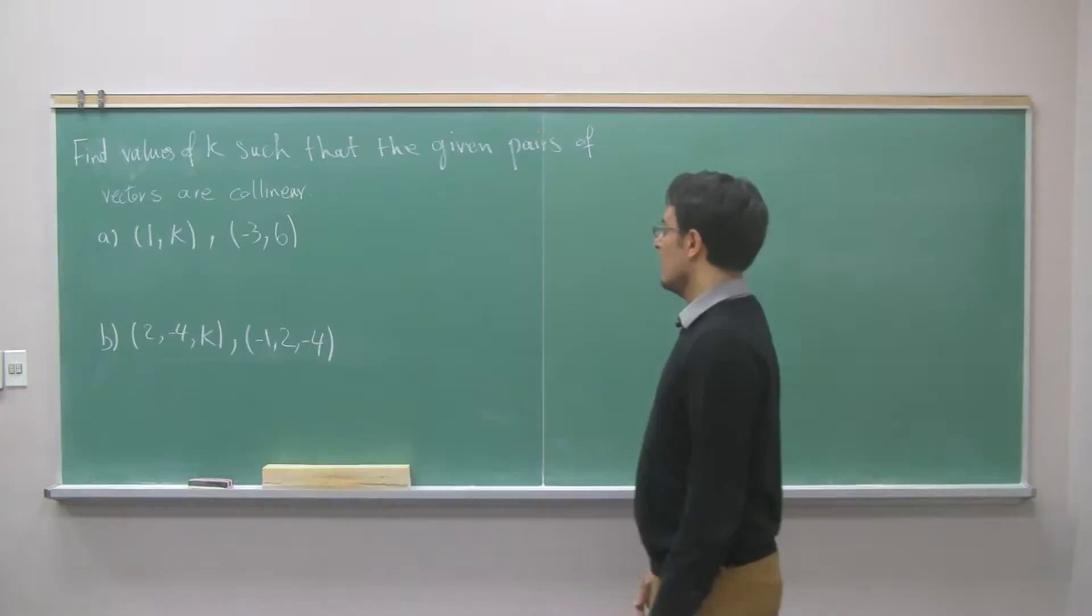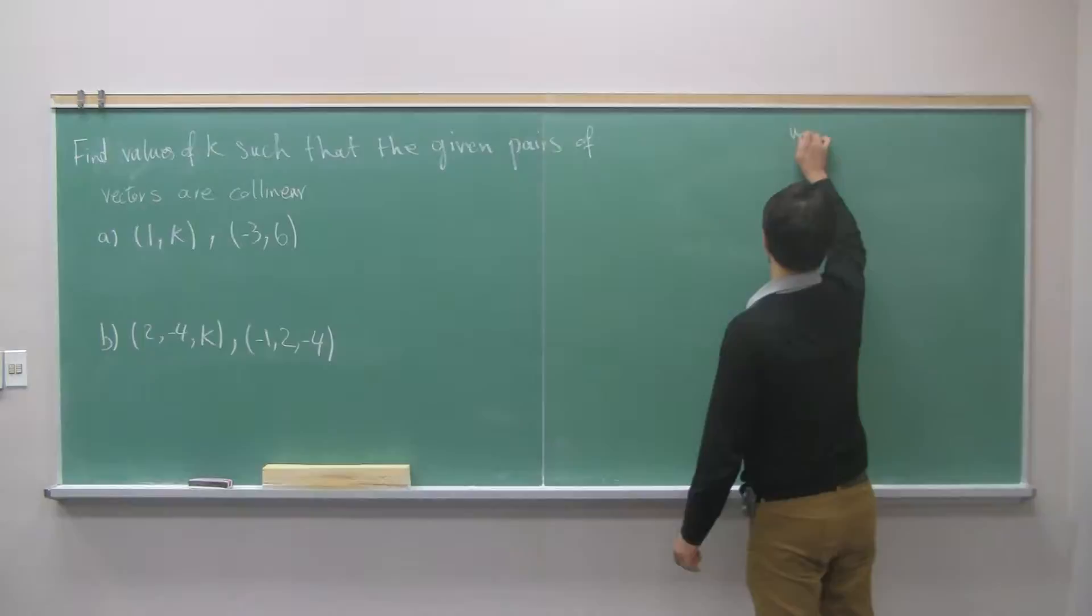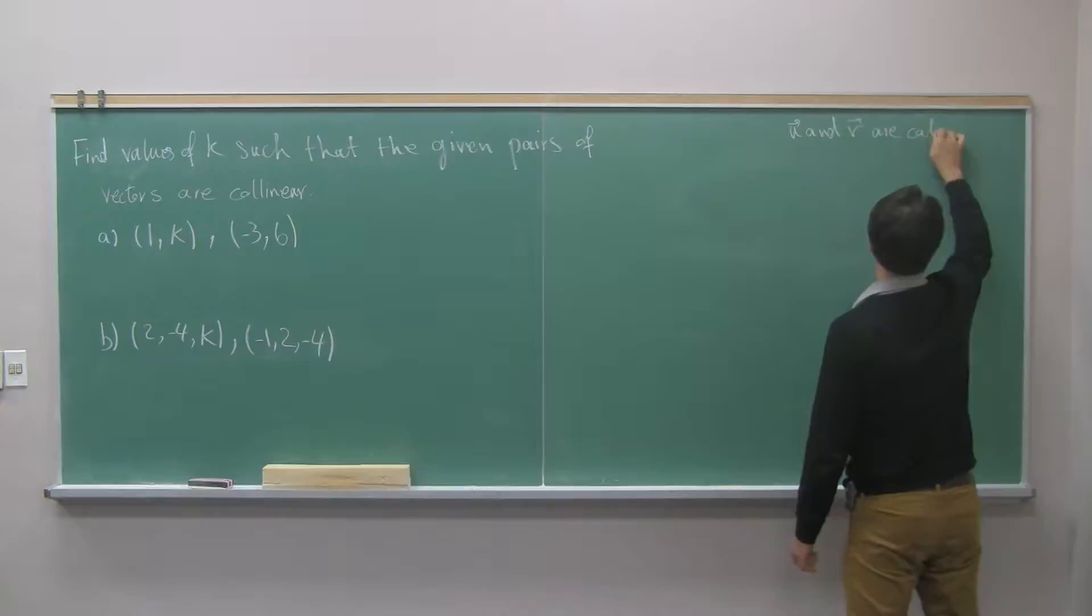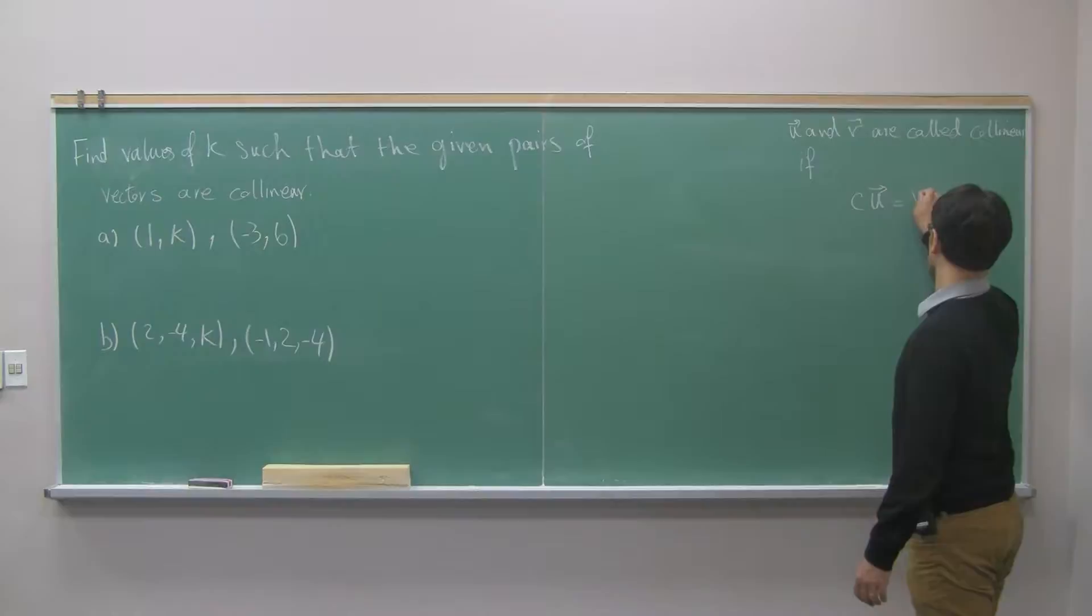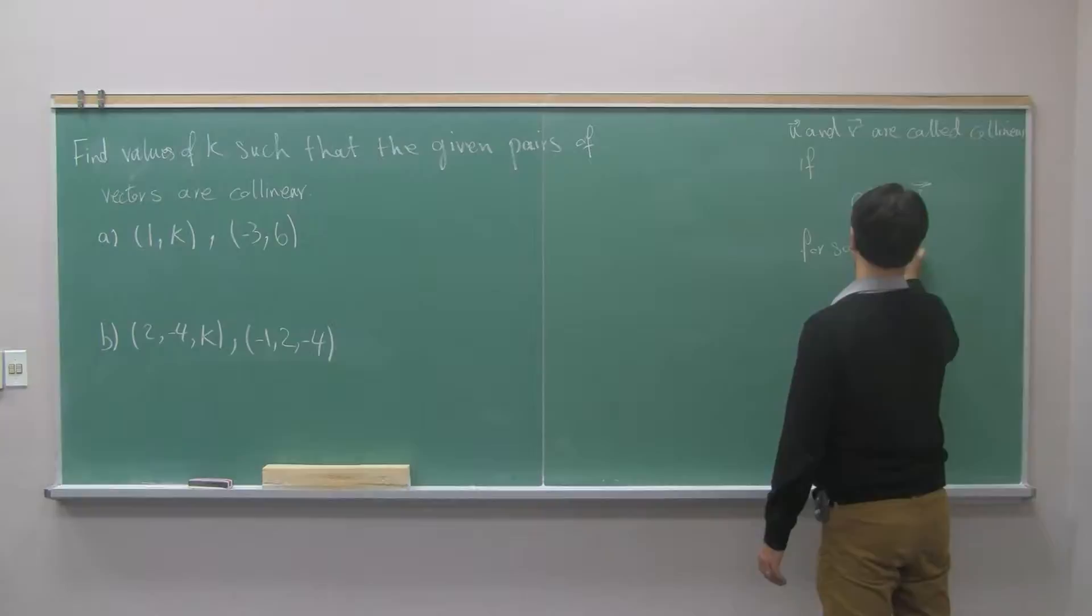Let's say first, what does collinear mean? Two vectors u and v are called collinear if there is a number c such that if you scalar multiply one of the vectors u by c, you get the other vector for some constant c.